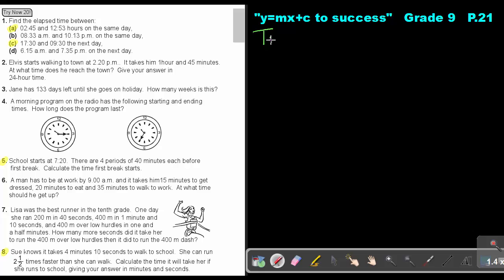Let's start. We are at try now 20. And we are at number 8. Find the elapsed time between 2:45. This is already in the 24-hour clock. So basically, I'm going to just say 12, 5, 3, and I'm going to subtract 0, 2, 4, 5. And this is going to be excellent. Because if I subtract 5, 3 minus 4, 5, I get 8 minutes. And if I subtract 2 from 12, I get, so it will be 10 hours and 8 minutes.